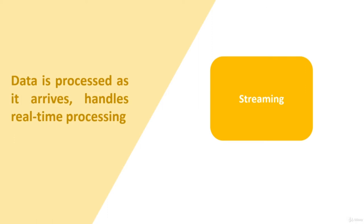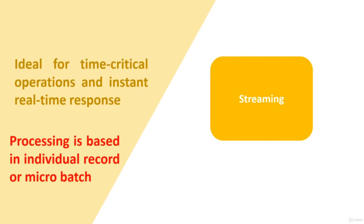Streaming processes every data element as it arrives — it doesn't wait, and processes individual pieces rather than groups. It handles real-time ingestion and is ideal for time-critical operations and real-time responses, such as online gaming, the stock market, or a system that tracks multiple environmental sensors. The processing is based on individual records.